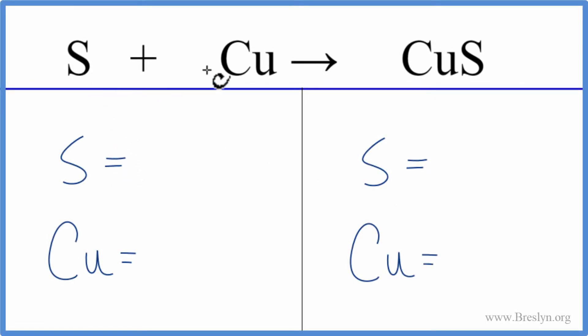In this equation we have sulfur plus copper and they're coming together. It's a combination or synthesis reaction to form copper 2 sulfate. So to balance the equation we can change the numbers in front, these coefficients.